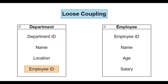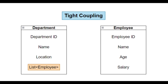We can have just an employee ID in our Department class instead. This will link with your Employee table but it is not actually tightly coupled code. If we make any change to the Employee class, we are only using employee ID in Department, and we are not going to change employee ID because it is a primary key. So anything you change in Employee won't affect Department — that's why we should prefer loosely coupled code over tightly coupled code.